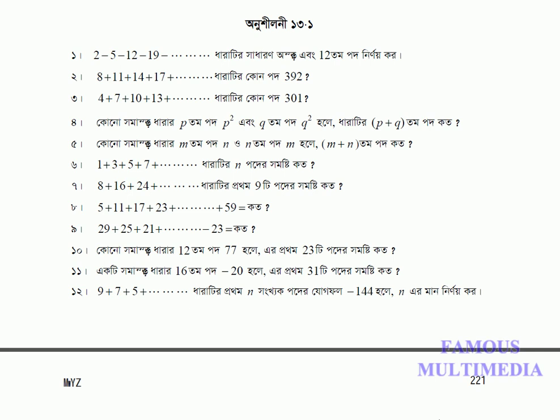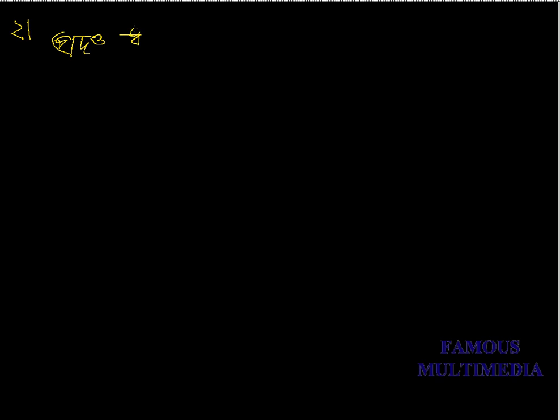Alright, let's start the d-n-number function. The d-n-number function is 8 plus 11 plus 14 plus 17 plus d.